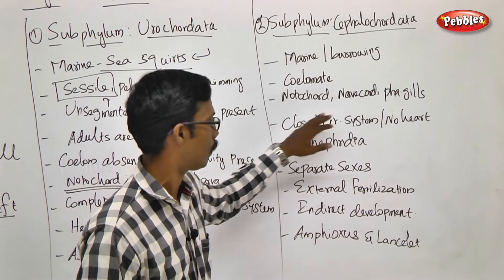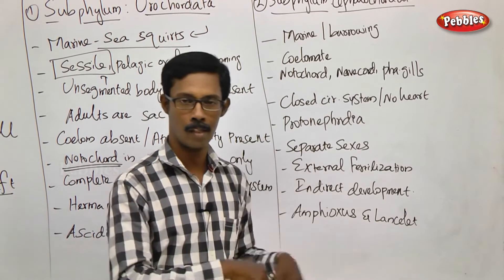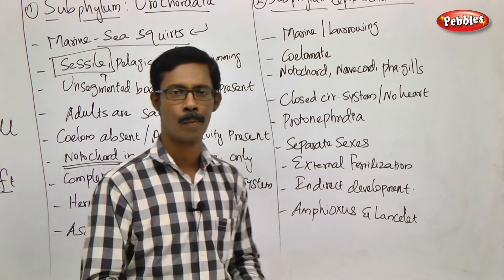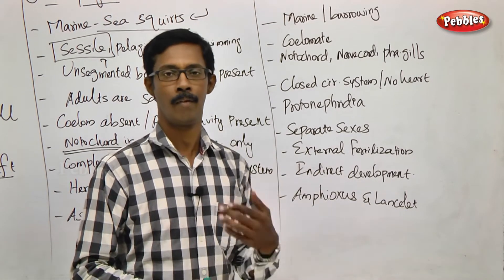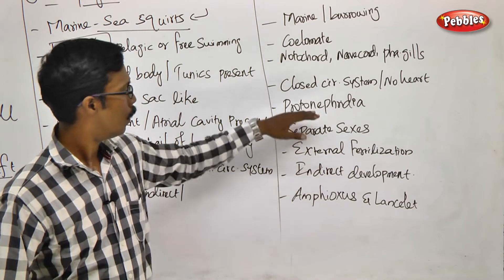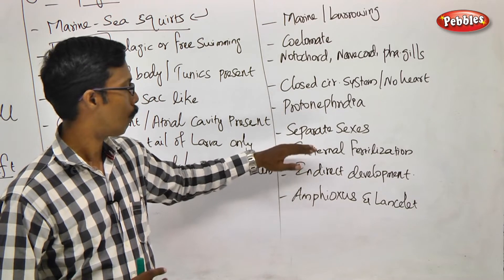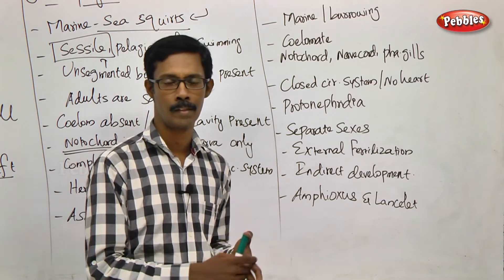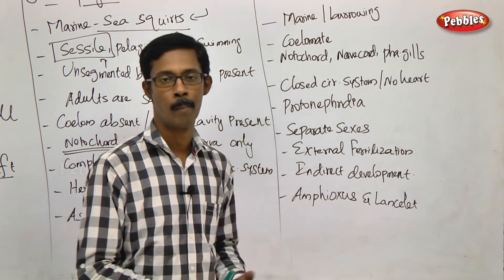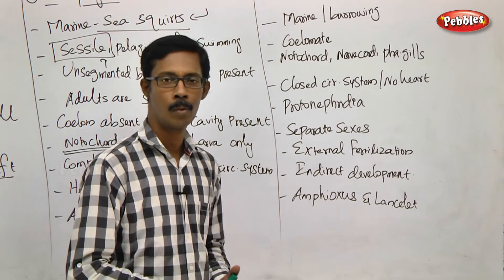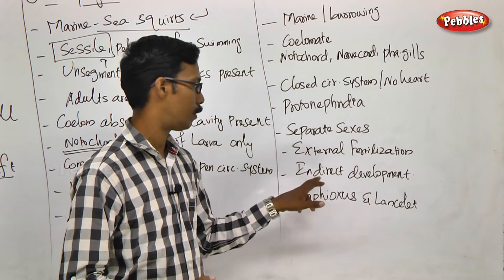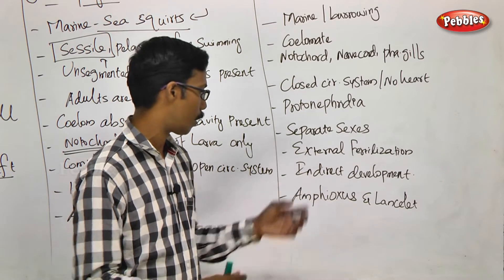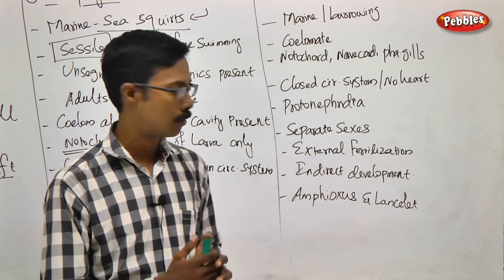A closed circulatory system is present, but no true heart — just vessels. Excretion is by means of protonephridia. We know the nephridia types: mesonephridia, protonephridia, and kidney structures. Sexes are separate in Cephalochordata. Fertilization is by means of external fertilization — male gametes and female gametes meet in the water and get fertilized. That is external fertilization. Direct development is present with no larval stages. The common examples are Amphioxus and Lancelet.